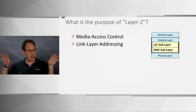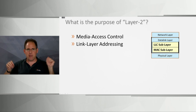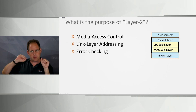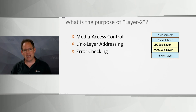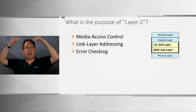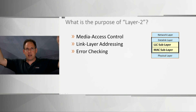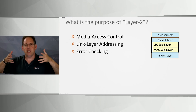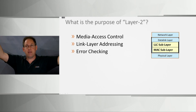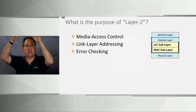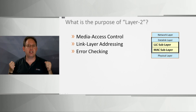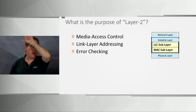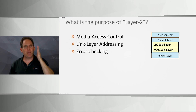The MAC sub-layer also does error checking — verifying that ones and zeros haven't been corrupted since transmission. Once done, it passes the frame to the LLC sub-layer. The LLC sub-layer's job is to figure out how to pass data upstream to the correct network-layer protocol — whether that's IPv4, IPv6, AppleTalk, IPX, or something else.